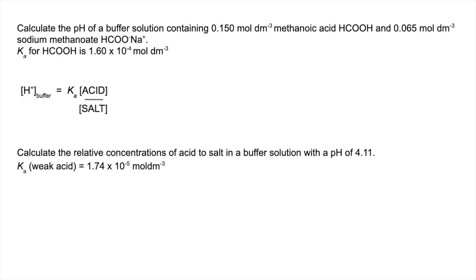So all we need to do is plug those numbers into that, so we get an H+ concentration of 3.69 × 10^-4 moles per decimeter cubed. And then to turn that into a pH, we just minus log that number and you get an answer of 3.43.